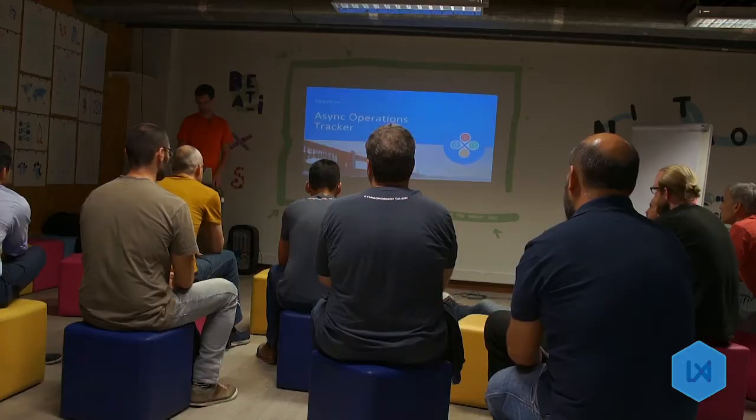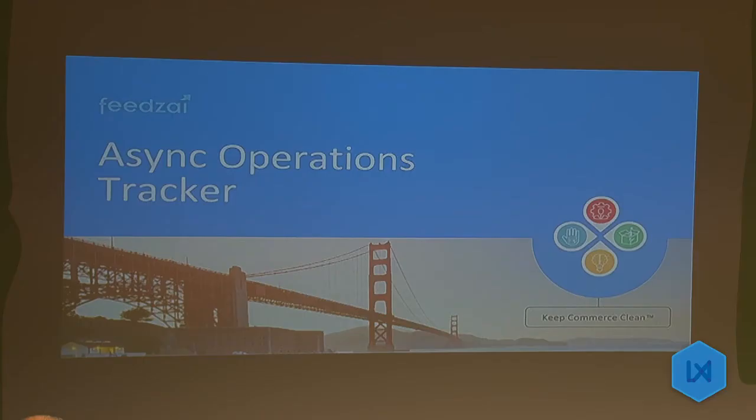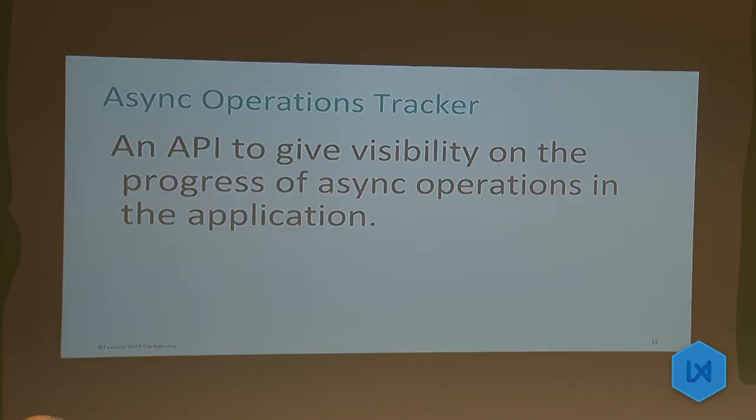We can then have tests that are more stable and do not fail because of some external factor. We came up with what we call the async operations tracker — basically an API to give external visibility, outside of the front-end application, of the asynchronous operations happening inside the application. This allows Selenium to wait on those operations and to run in a reliable way.